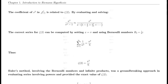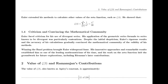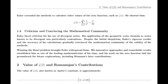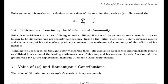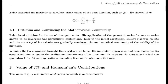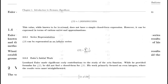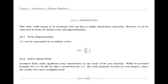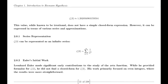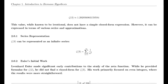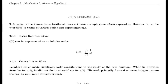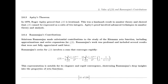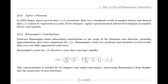In 1859, Riemann published his seminal paper on the distribution of prime numbers, which introduced the zeta function and laid the groundwork for modern analytic number theory. This paper was a milestone in mathematical history and has had a lasting impact on the field, influencing subsequent research and discoveries.